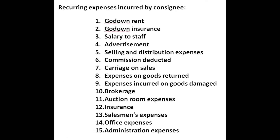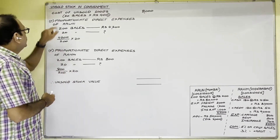Recurring expenses of the consignee include: godown rent, godown insurance, salary to staff, advertisement, selling and distribution expenses, commission deducted, carriage on sales, expenses on goods returned, expenses on damaged goods, brokerage, auction room expenses, fire insurance, salesman expenses, office/administration expenses, etc. Important: if the question gives no proper information about the nature of an expense, treat consignor's expenses as non-recurring and consignee's expenses as recurring.